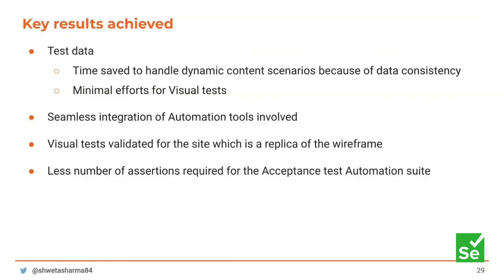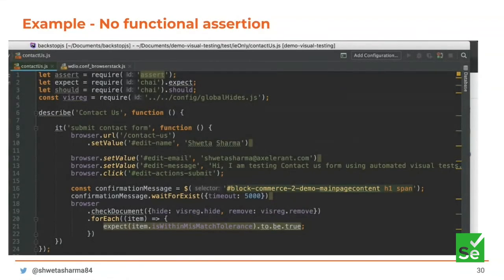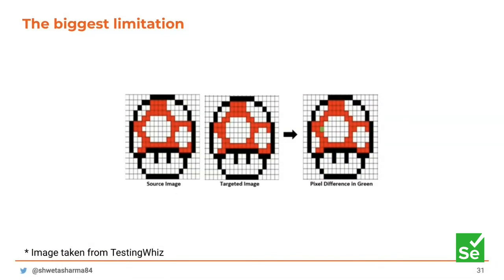Visual tests also mean fewer assertions required in acceptance test automation. Here's an example testing the contact us form on the Drupal Commerce website — if you observe this test closely, there isn't a single functional assertion. There is only one visual assertion at line 19 which checks the entire page — validating functionality, the header, the footer, and the response message after submitting the form. I haven't written a single functional assertion for any of this. That's the power of automated visual tests.